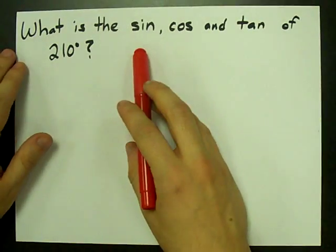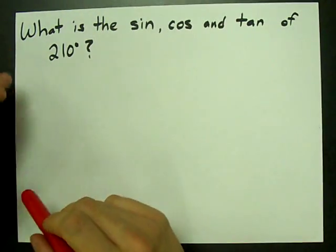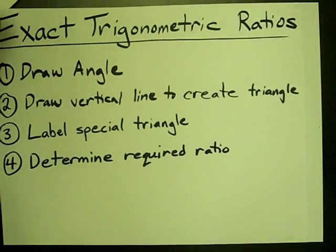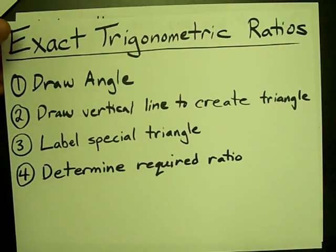One of the questions that I want to answer is, what is the sine, cos, and tan of 210 degrees? So by following the process, number 1, draw your angle and draw a vertical line to create the triangle.